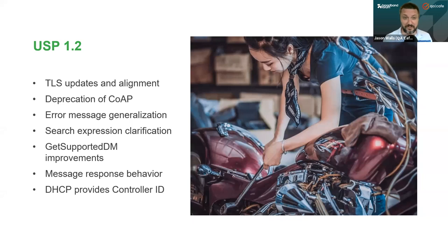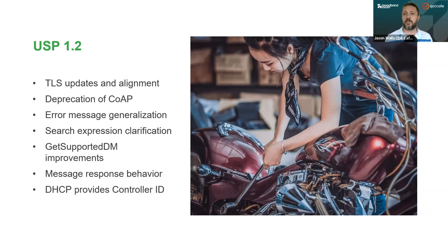In terms of the different transport mechanisms, in 1.1 we have CoAP, MQTT, STOMP, and WebSockets. We have decided to deprecate CoAP. In our effort to remain transport-agnostic, it made CoAP a bit complex when we put it in USP, such that it really only makes sense to use it in a local network where it's not crossing any network boundaries. We've found that most of the same use cases can be met by using WebSockets. Also, every browser and mobile environment already supports WebSockets, making it very common to find implementations everywhere. We've also become more efficient with error messages, especially at the MTP layer, and clarified how search expressions are supposed to work. We added the ability to provide the controller's endpoint ID when using DHCP discovery.